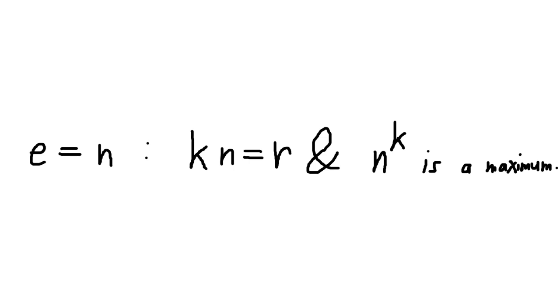In proper terms, e is the only number n such that the sum of kn's is a fixed r and the product of kn's is a maximum given this fixed r.